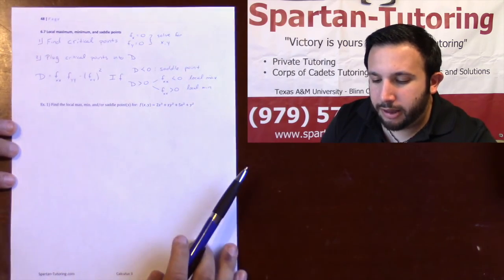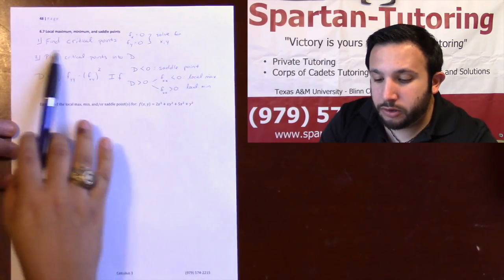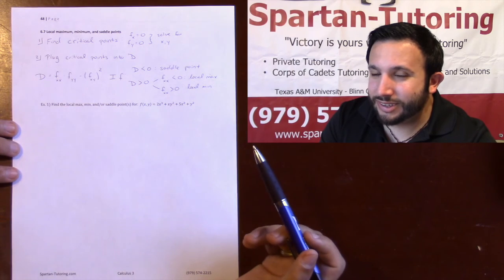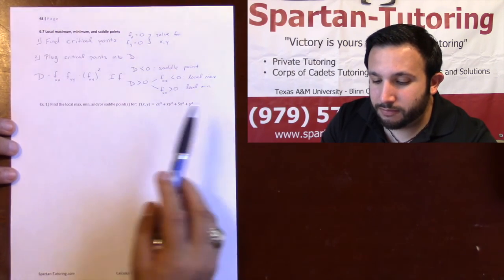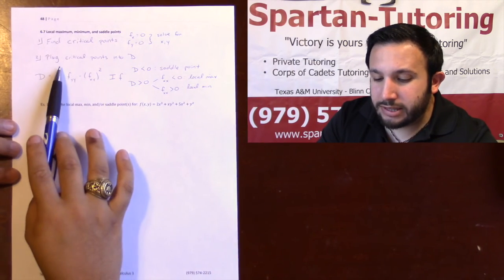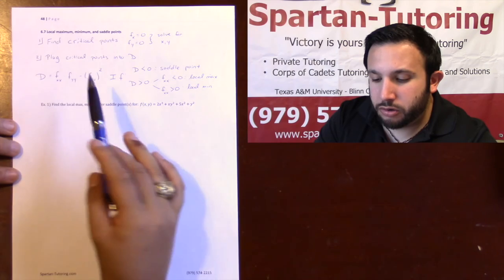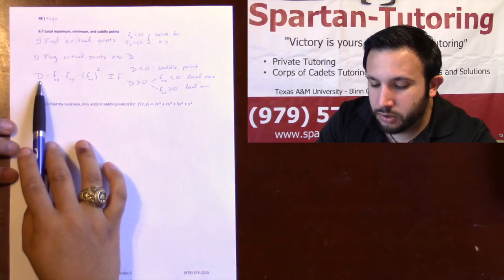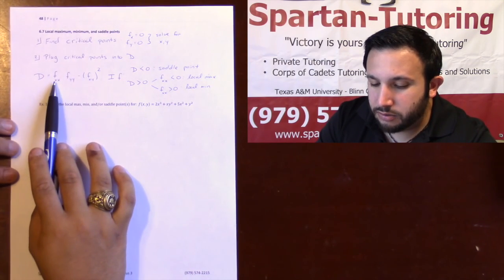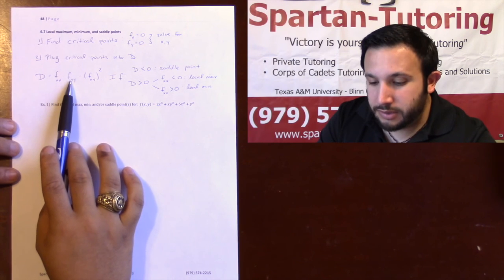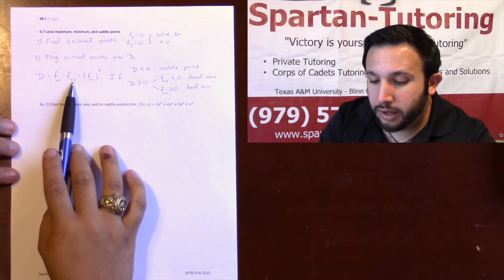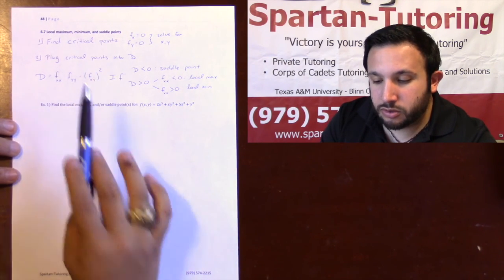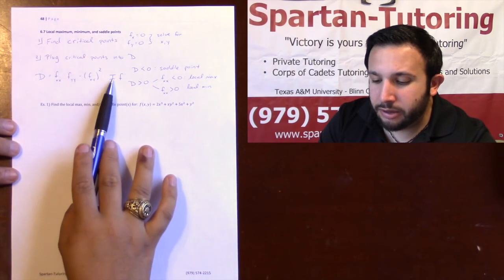That's probably your toughest step, because once you have your critical points it's actually plug-and-chug after that. The last thing you need to do is plug your critical points into D.